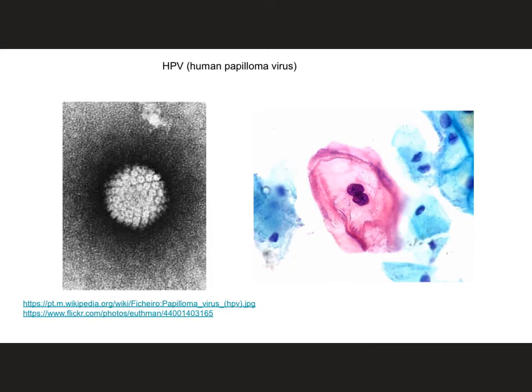Finally, one more virus: HPV, the human papillomavirus. Here's an electron micrograph where you can see the external protein structure. HPV is known for causing venereal warts, but also because it is an RNA-based virus, the nucleic acid infects cervical cells and can cause them to become cancerous. This is a stained and infected cervical cell showing that problem.